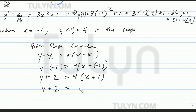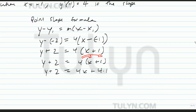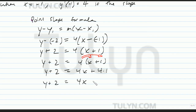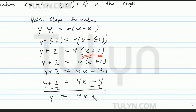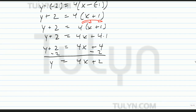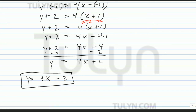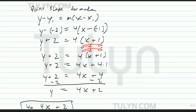Use the distributive property. y plus 2 equals 4 times x plus 4 times 1. So y plus 2 equals 4x plus 4. Subtract 2 from both sides: y equals 4x plus 4 minus 2, which is y equals 4x plus 2. So the equation of the tangent line to the given function at negative 1, negative 2 is y equals 4x plus 2.